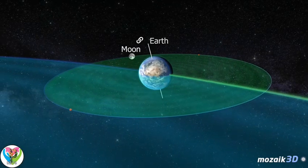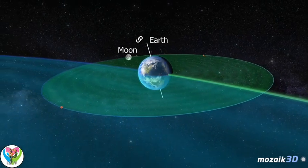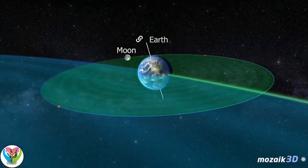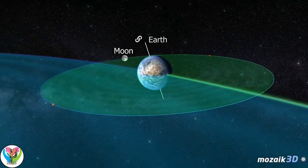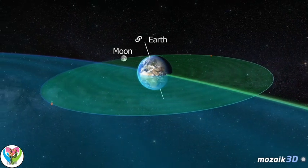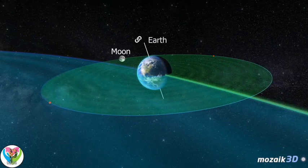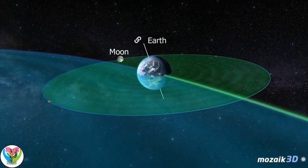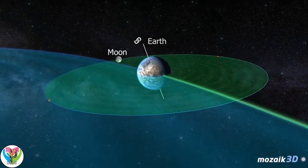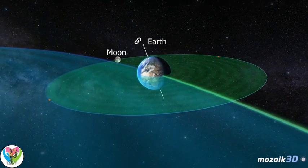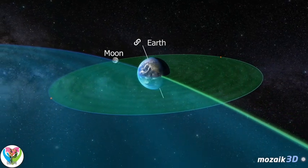The major effect of tides on the Earth is the slowing of our planet's rotation, and therefore a gradual increase in the length of the days. 400 million years ago, one year lasted about 400 days, and the length of one day was only 21.8 hours.